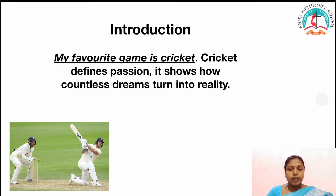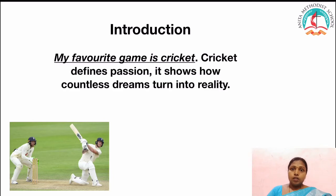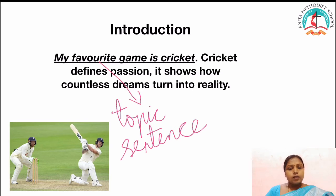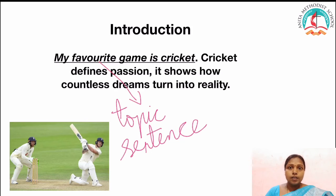Here, can you see the first line: 'My favorite game is cricket.' That is the first sentence of the paragraph. I told you already it is called the topic sentence. Topic sentence is the main introduction of the paragraph — the first sentence of the paragraph. Why do I call it the topic sentence? Because it tells you about the entire paragraph. When you read 'My favorite game is cricket,' you understand that we are going to write a paragraph about cricket. That's why we call it the topic sentence.